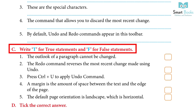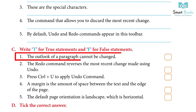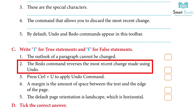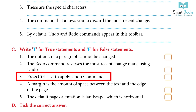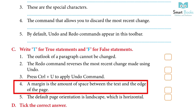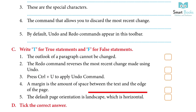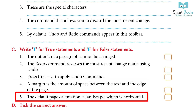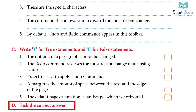Write T for true and F for false: 1. The outlook of a paragraph cannot be changed. Answer: False. 2. The redo command reverses the most recent change made using undo. Answer: True. 3. Press Ctrl+U to apply the undo command. Answer: False. 4. A margin is the amount of space between the text and the edge of the page. Answer: True. 5. The default page orientation is landscape, which is horizontal. Answer: False.